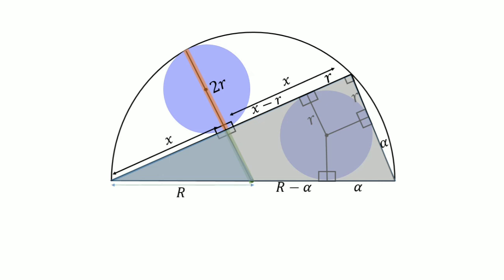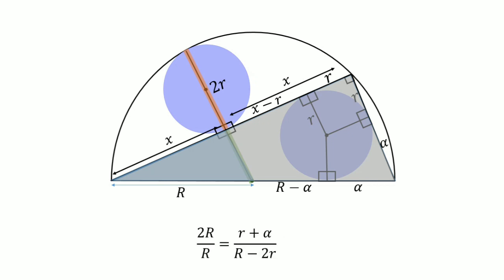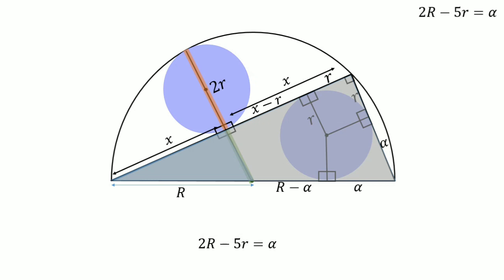Writing the equation from similarity: 2R divided by capital R equals r plus alpha divided by the green line, and the green line is R minus 2r. Substituting, we get 2 alpha equals 2R minus 5r. Writing this in the corner.